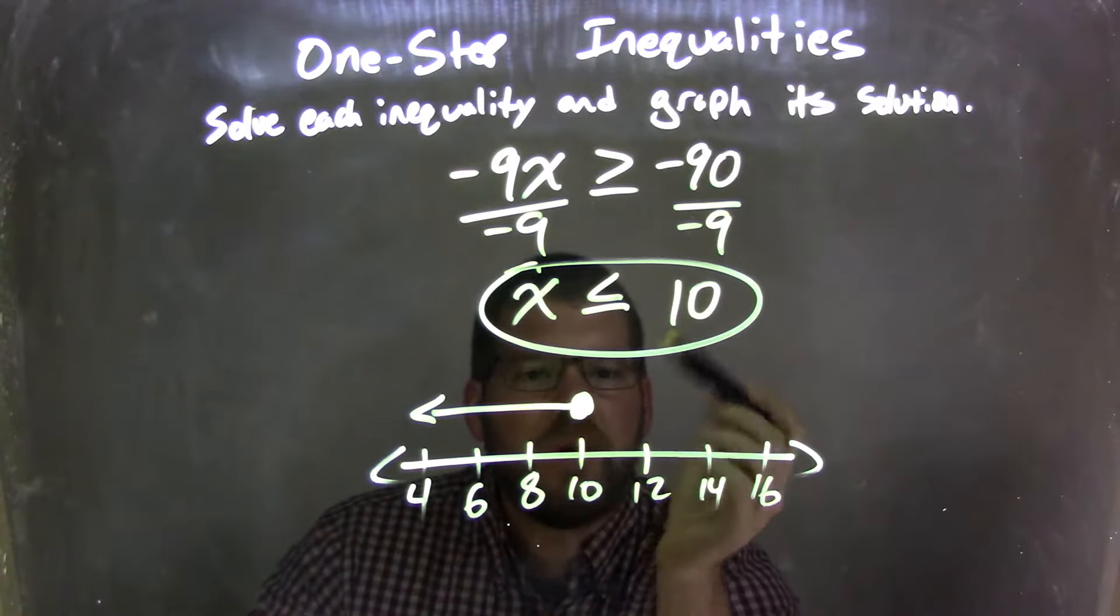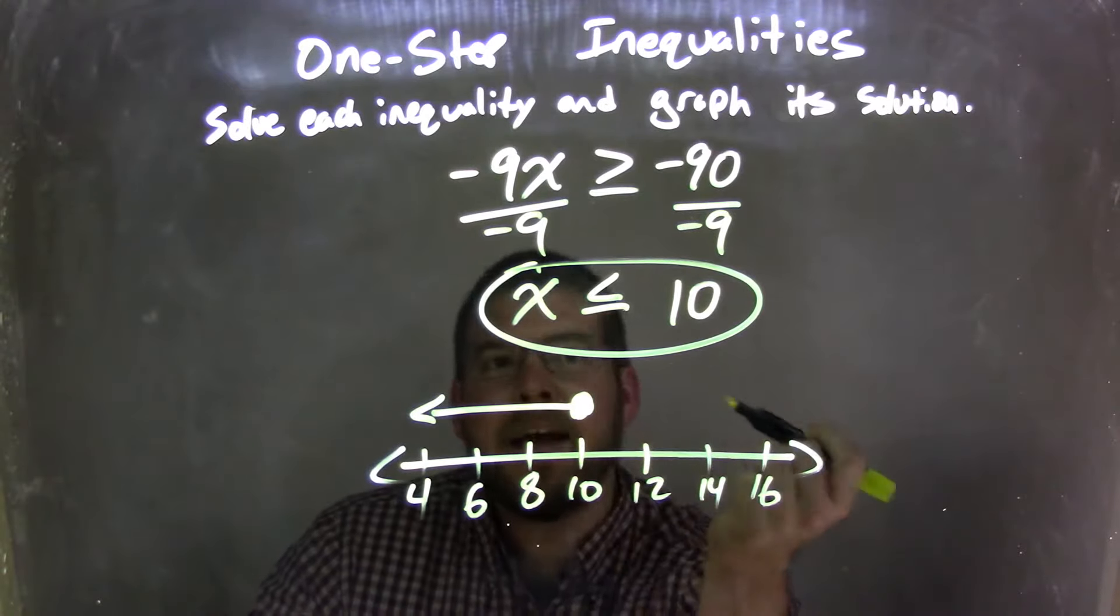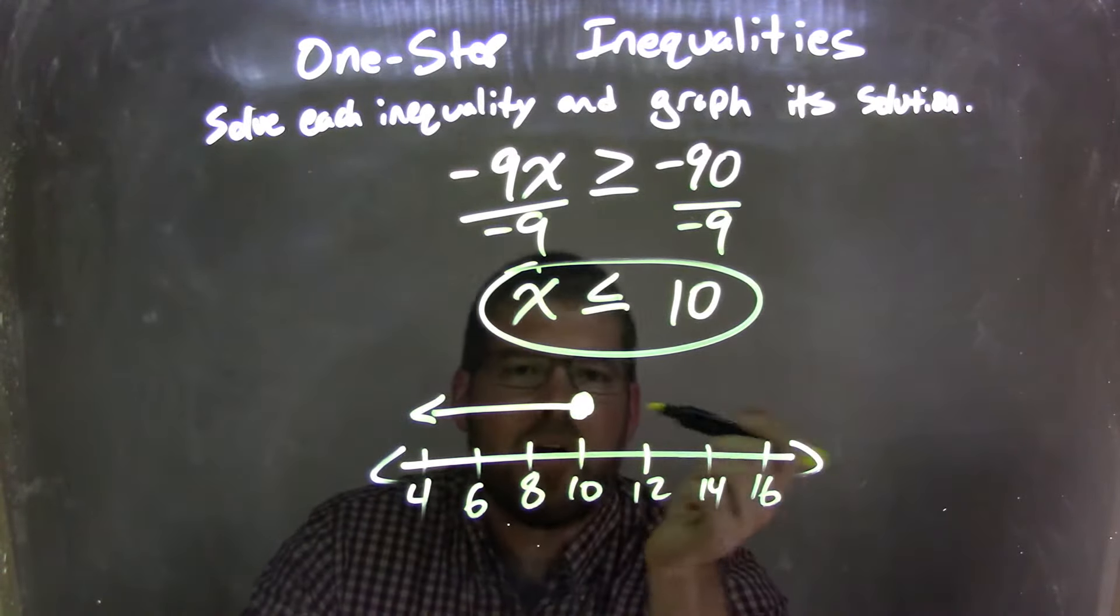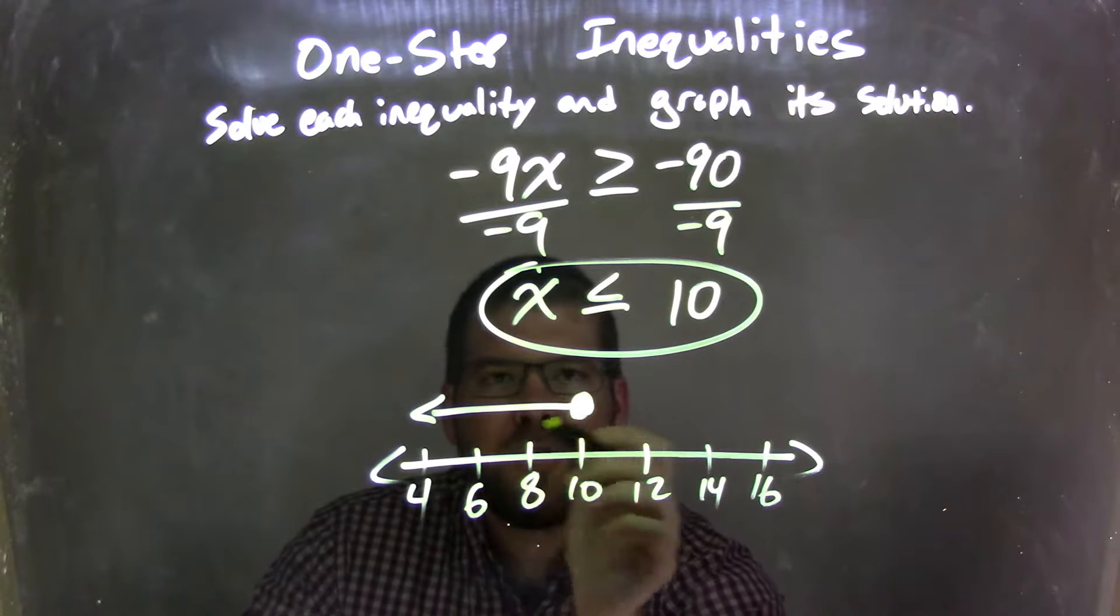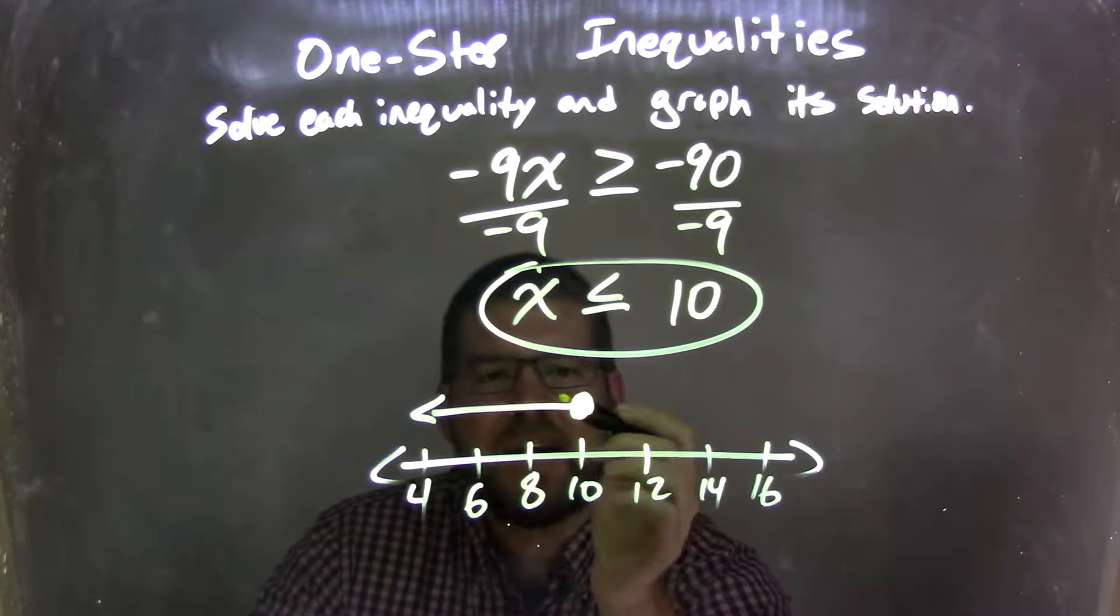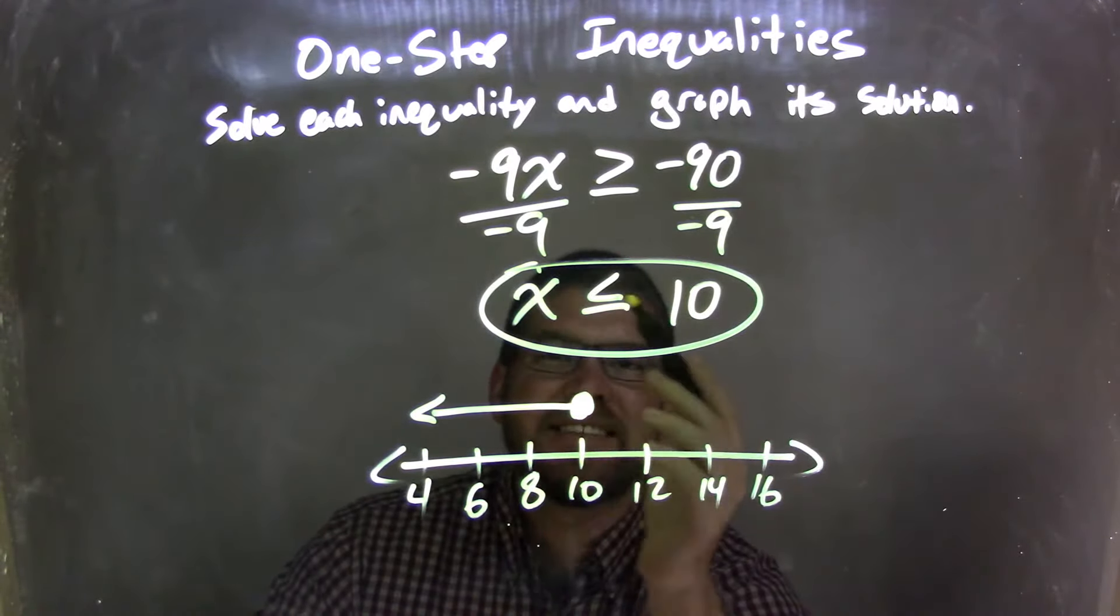So I needed to graph that, so I started with 10, and I knew it was equal to, so I made a closed circle at 10, and then x is less than that, all the values that are less than that as well. So I put the arrow to the left. So this graph shows all the values that x can be, every value that's less than or equal to 10. So this graph matches our final answer of x is less than or equal to a positive 10.